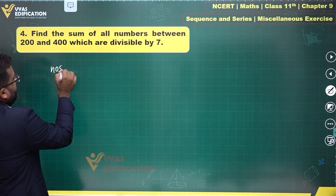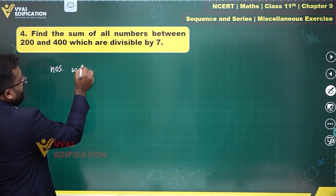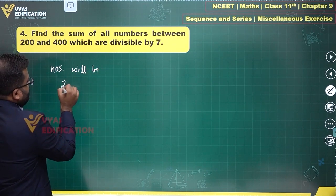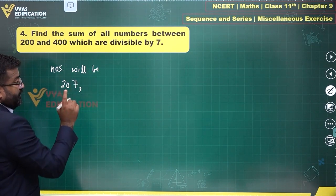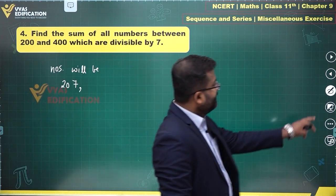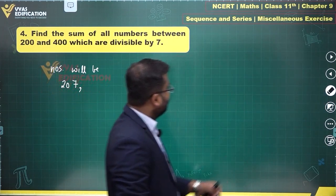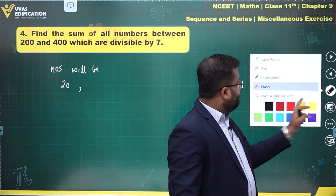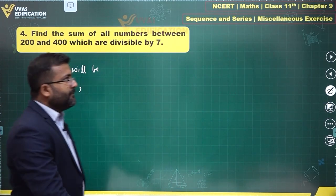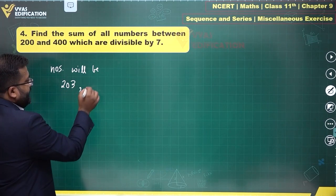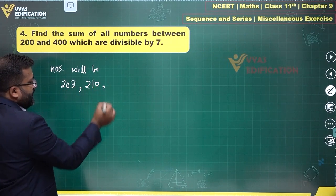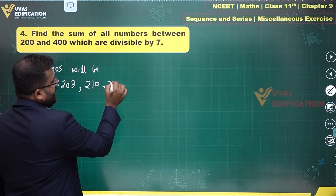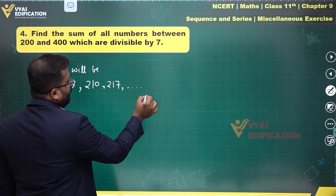203 will be divisible by seven. Sum of all numbers divisible by seven will be 203, not 207. Then the next number will be 210, next number will be 217, and so on and so forth.